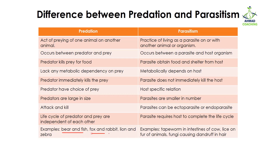Examples of predation include bear and fish, fox and rabbit, and lion and zebra. Examples of parasitism include tapeworm in the intestines of a cow, lice on the fur of animals, and fungi causing dandruff in the hair.